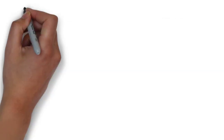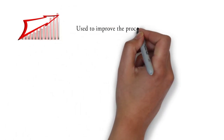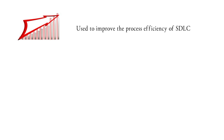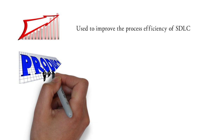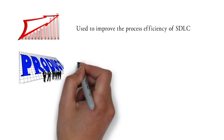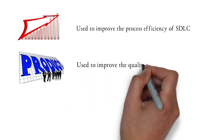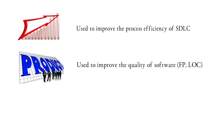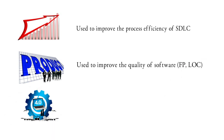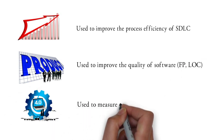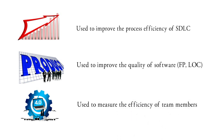Now we'll look at the different types of software test metrics. The first type is process metrics, used to improve the process efficiency of the software development life cycle. The second type is product metrics, used to improve the quality of software. The third type is project metrics, used to measure the efficiency of team members.